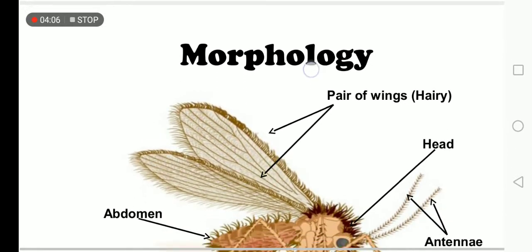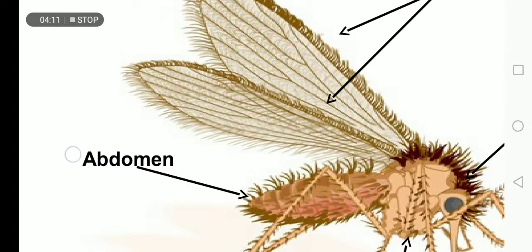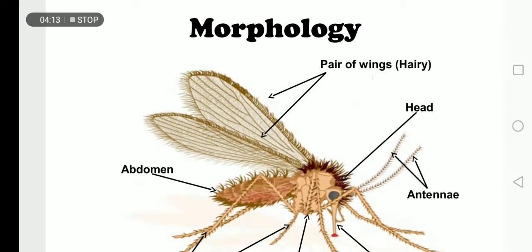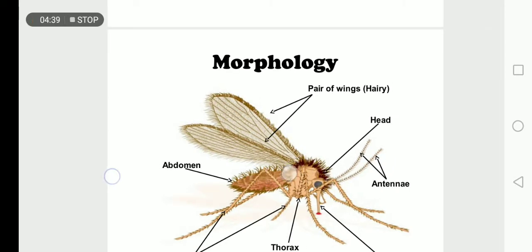Males have three claspers attached to the posterior end of the abdomen. This is the morphology of this insect. You can see the pair of wings — note the shape, turbinate at the end. The body is heavily endowed with hairs present on every part. This is the abdomen, this is the antennae, this is the proboscis, this is the thorax, and this is the head.